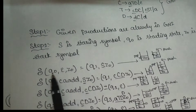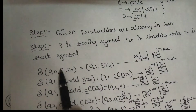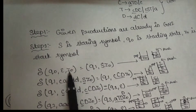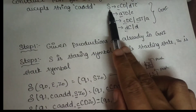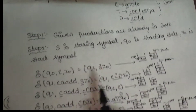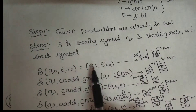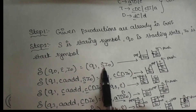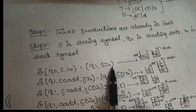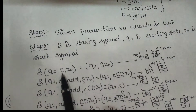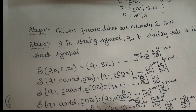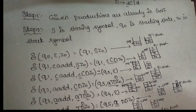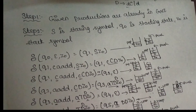So let's see. If you look at the pushdown automata, in the starting state, you read the input symbol, replace the stack symbol — that's the starting symbol — and the state changes. In the starting state, the next state is Q1. Z-naught is pushed and then the starting symbol is pushed. Then you can read the input symbol. In the second step, verify the top of the stack. In the third step, if the top of the stack is a non-terminal, push the production; if it is a terminal, match the input symbol.